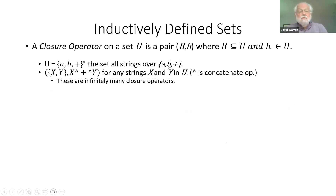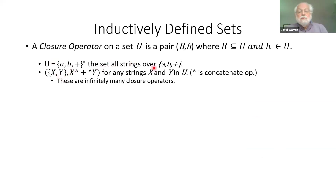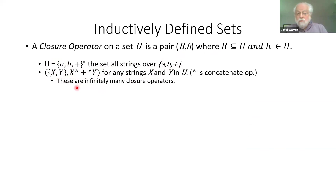An example: let U be the set of all strings over A, B, and plus. We can define closure operators — infinitely many, just for fun. If X and Y are in U, then X concatenated with plus concatenated with Y will be in U. So this is a closure operator on U, and as I mentioned, there are infinitely many of them here.